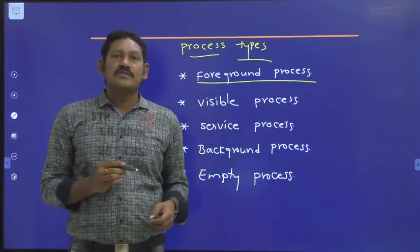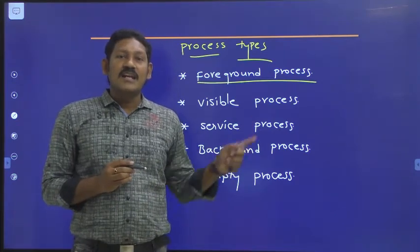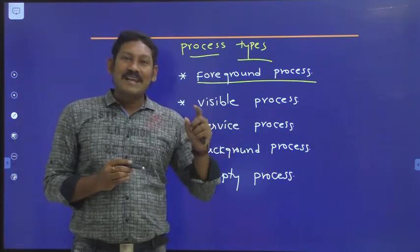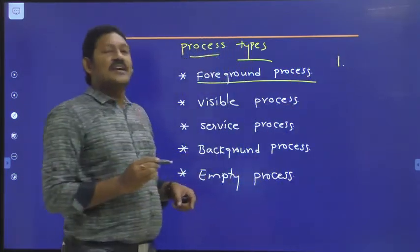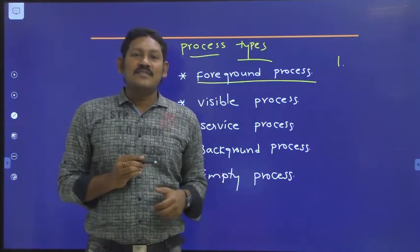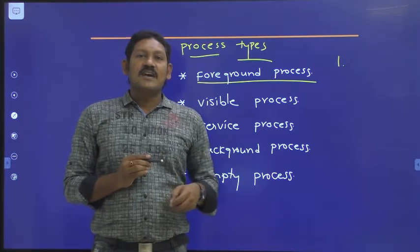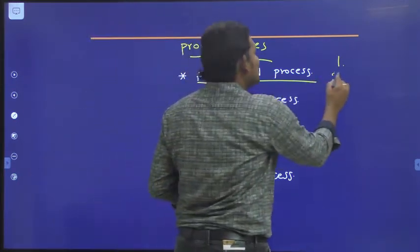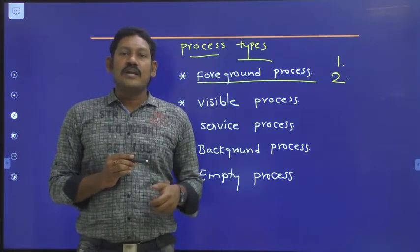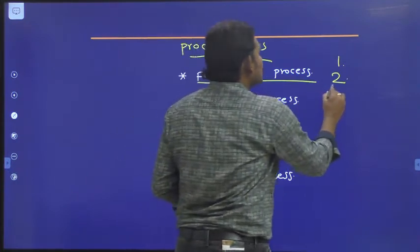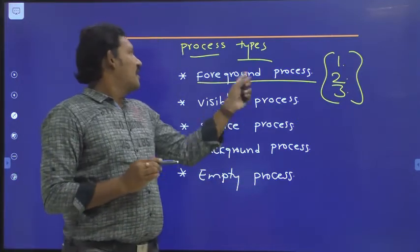The first one is foreground process. A process is considered to be a foreground process if any one of the conditions holds. First, if it is running an activity at the top of the screen that the user is interacting with. Second, if it has a broadcast receiver that is currently running. Third, if it has a service that is currently executing code in one of its callbacks. If any one of these conditions is satisfied, that process is called a foreground process.